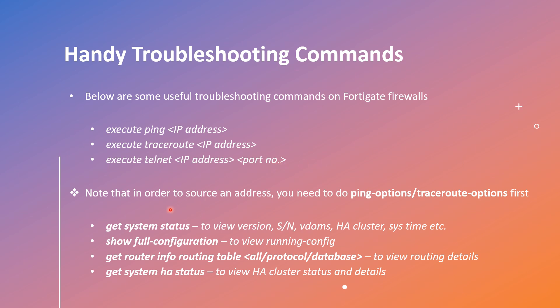I've also shared some other useful commands, like 'get system status' to view version and serial numbers, VDOMs, etc. To view the running config, you use 'show full-configuration'. Then we have the routing table information that can be retrieved using the get command, and the HA status that can be checked using the get command as well. Note that this slide doesn't include any diagnostic commands, because we are going to cover those at the end of the session when we do a live debug of a packet on a firewall.